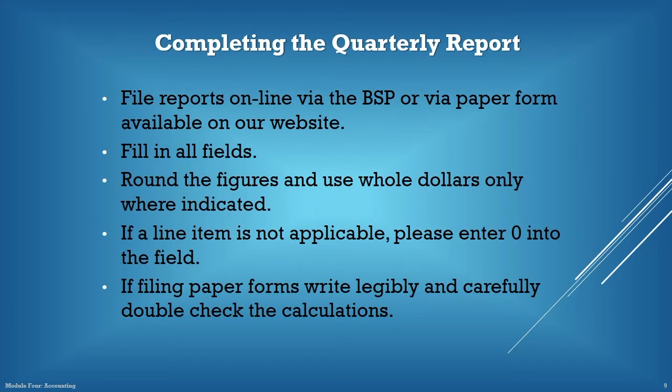When filing the quarterly report, round the figures and use whole dollar amounts in the appropriate fields. If the organization conducted Bingo during the quarter, the gross receipts and prizes awarded cannot total zero. All line items should be completed. Even if a line item is not applicable, please enter zero into the data field.